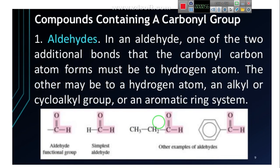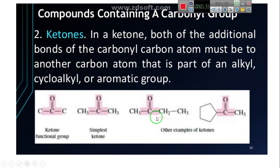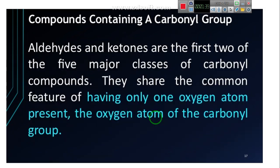Let's talk about aldehydes. In an aldehyde, the main carbonyl group is H-C double bond O. This H-C=O can be surrounded by an alkyl group or even an aromatic ring. In a ketone, the main feature is that C=O is surrounded by two carbons — two alkyl groups, or alkyl/aromatic groups. So the main difference: in aldehyde, H-C=O is at the end; in a ketone, C=O is between two carbon groups.